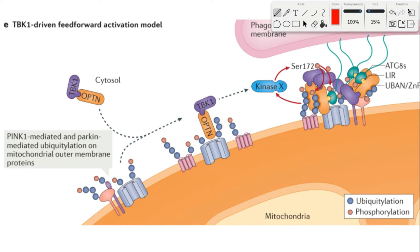In terms of mitophagy regulation, it's important to note the kinase TBK1. TBK1 interacts with various autophagic cargo adapters like OPTN and P62 and phosphorylates them, which results in increased affinity for ubiquitin chains. Preventing the interaction between OPTN and TBK1 by site-directed mutagenesis — mutating the residue phosphorylated on OPTN by TBK1 — significantly impairs mitophagy. So TBK1 is pretty important.